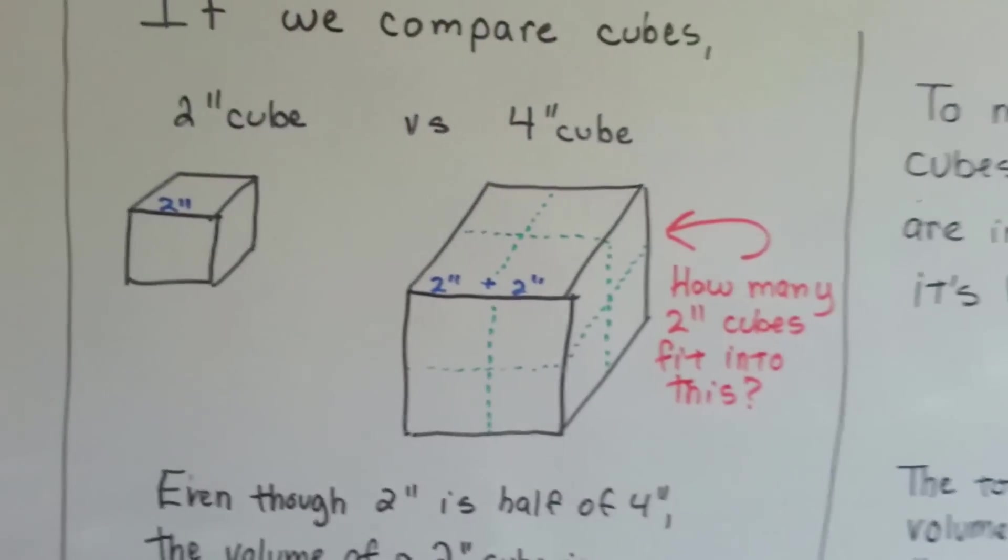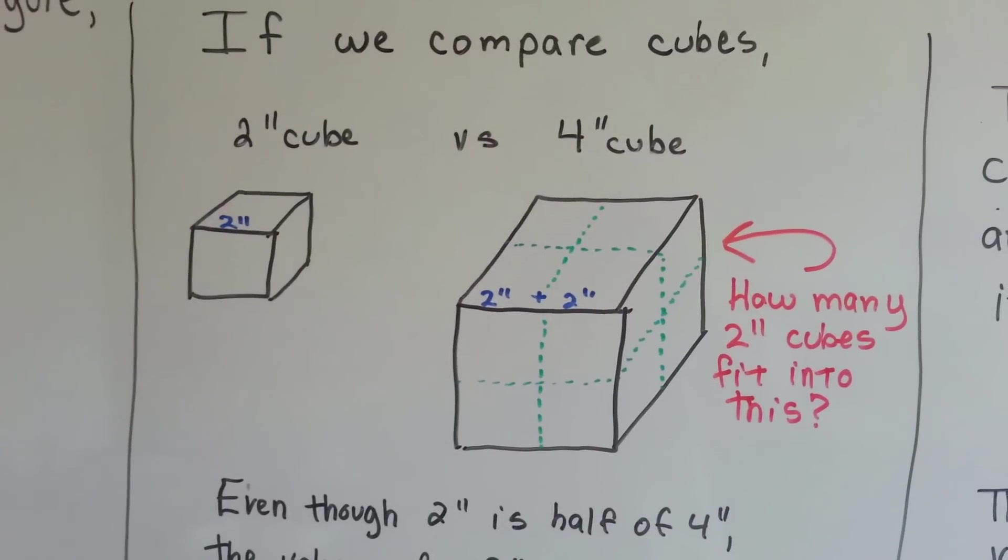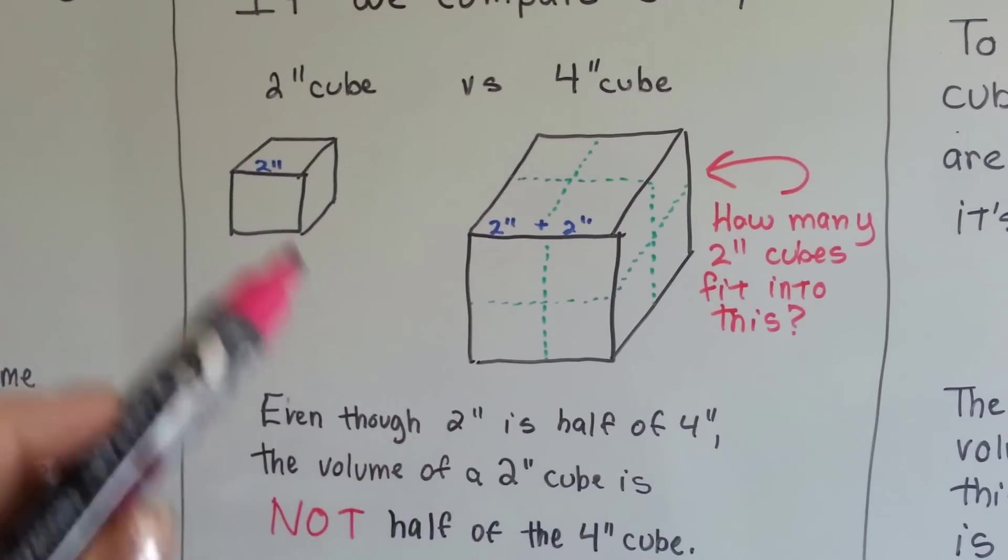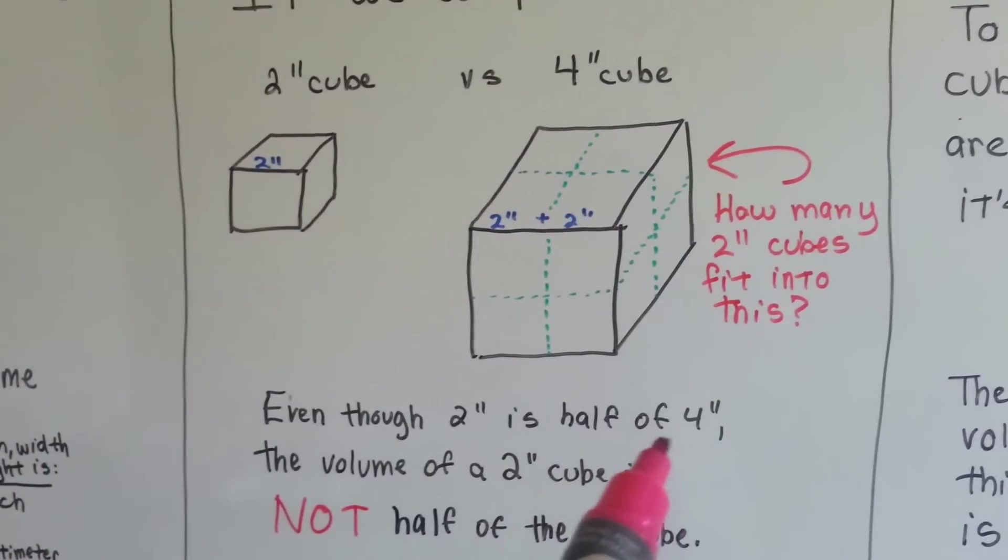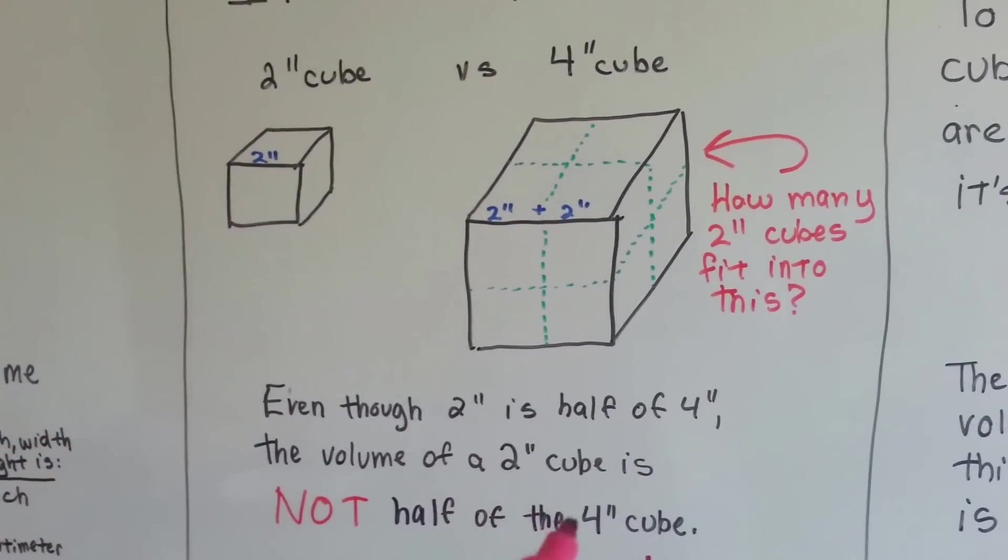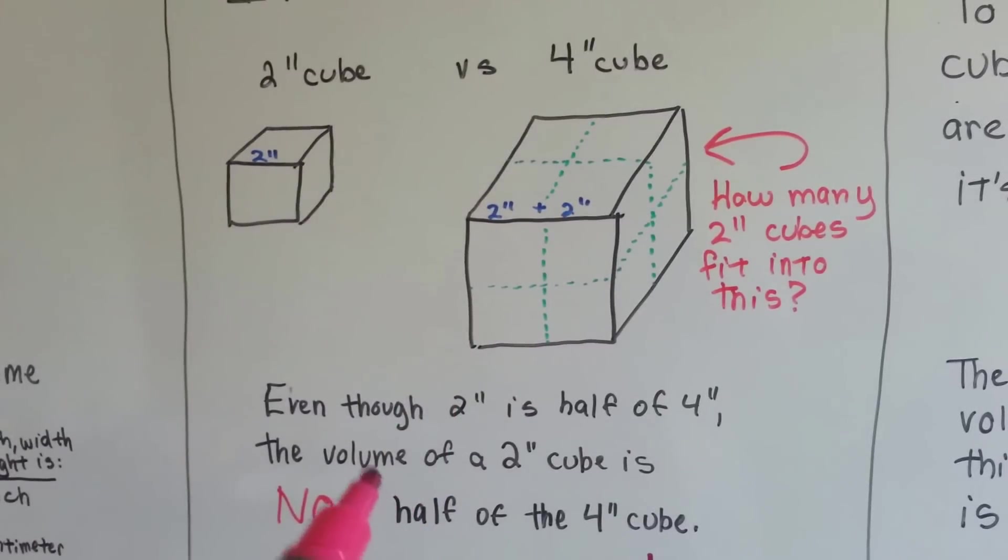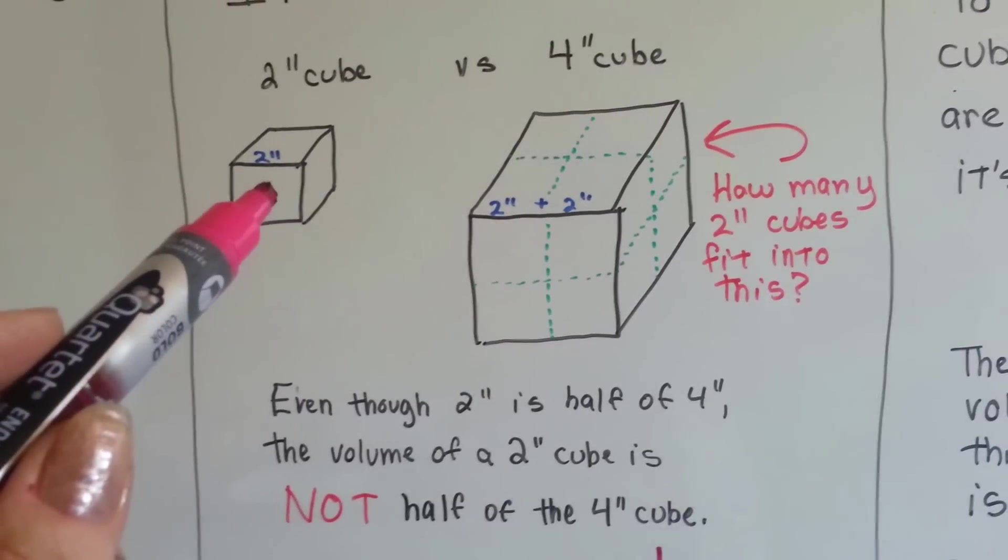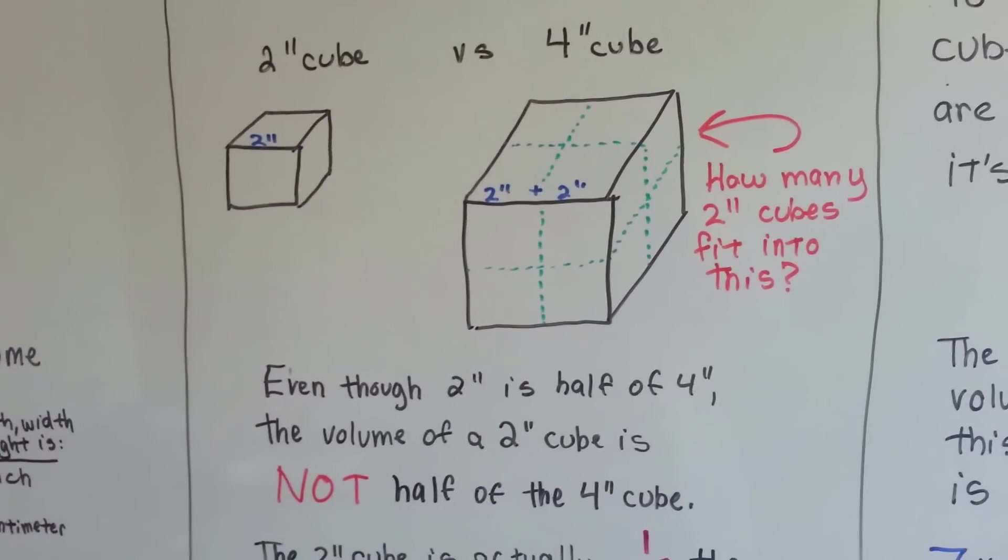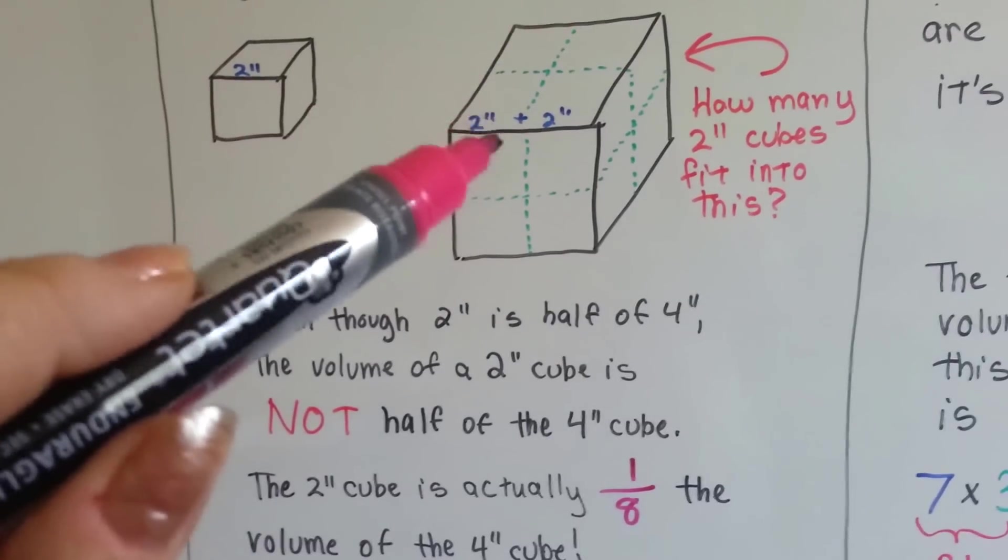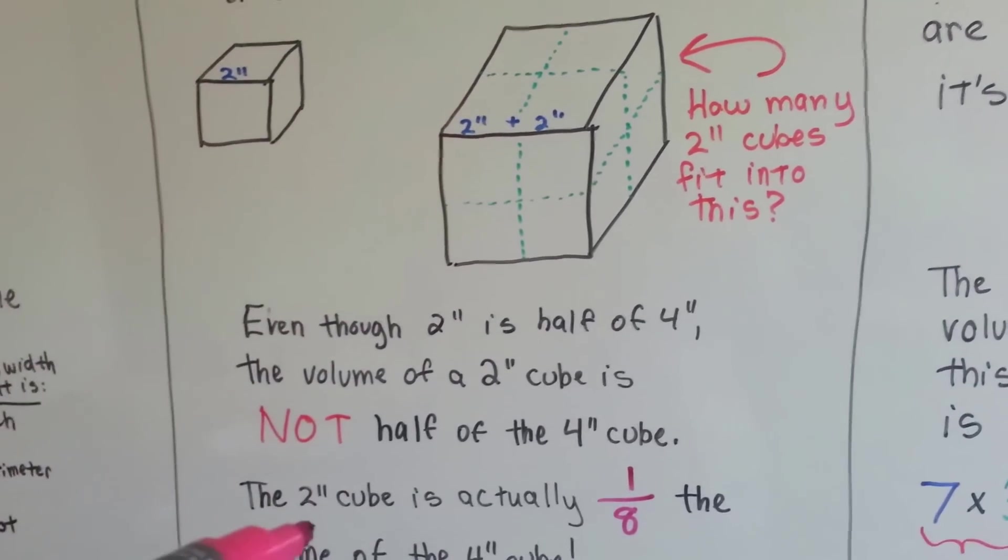Now, if we compare cubes, like a two inch cube versus a four inch cube, even though two is half of four, the volume of a two inch cube is not half the volume of a four inch cube. If you had a six inch cube, it would not be half the volume of a twelve inch cube.